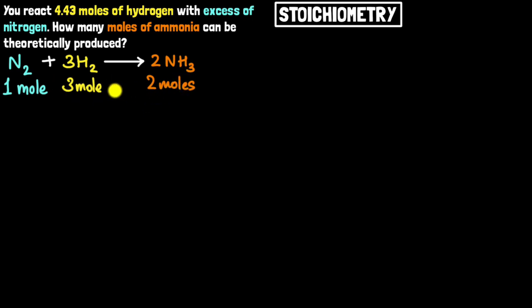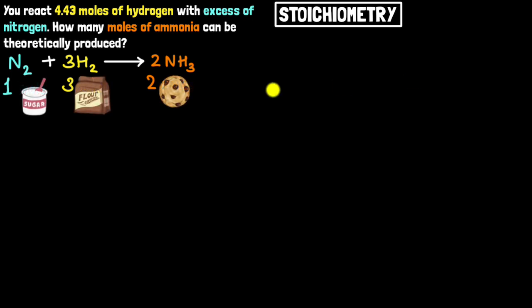The balanced equation is telling me the ratios in which the reactants and products must be for the reaction to work — the same applies to recipes when you're cooking. For example, let's say you want to bake cookies: you can take one cup of sugar and mix it with three cups of flour. If you mix one cup of sugar with three cups of flour, let's say you can bake two cookies.